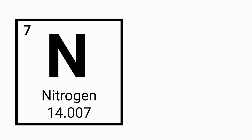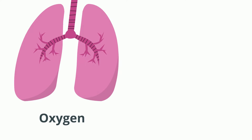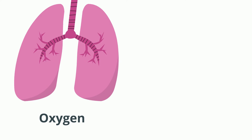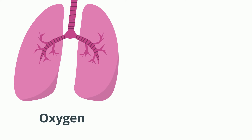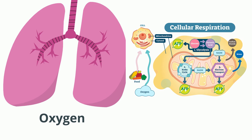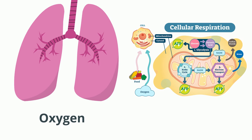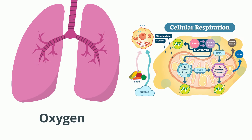Nitrogen is needed to build our amino acids and proteins. Oxygen is vital for cellular respiration. During cellular respiration, glucose reacts with oxygen, forming ATP that can be used by the cell.